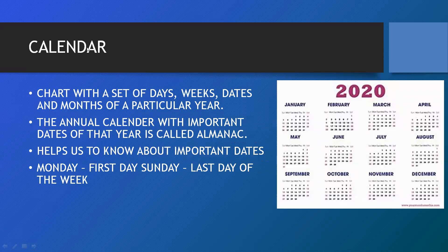Now we will learn about what a calendar is. Here you can see I have given the calendar of the year 2020. A calendar is a chart — remember, it is a chart — with a set of days. Sunday, Monday, Tuesday — these are the days. These comprise the weeks, and weeks comprise seven days.